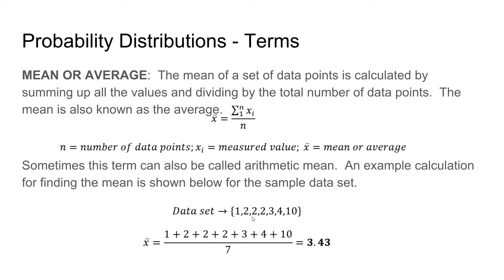We have a data set of 1, 2, 2, 2, 3, 4, and 10. We add those values together, divide by the total number of data points, and find that our average is 3.43.